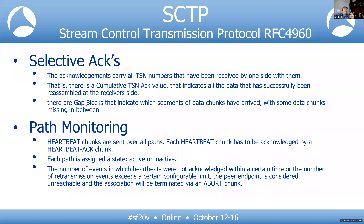There is also a section called gap blocks. Within the acknowledgement, the receiver can say it received TSN 1, then put TSN 3 in a gap block — meaning TSN 2 was not received. This is similar to Selective Acknowledgements in TCP, where you have the cumulative ACK plus SACK blocks. SCTP uses the SACK as the overall ACK and gap blocks to identify where the gaps have occurred.